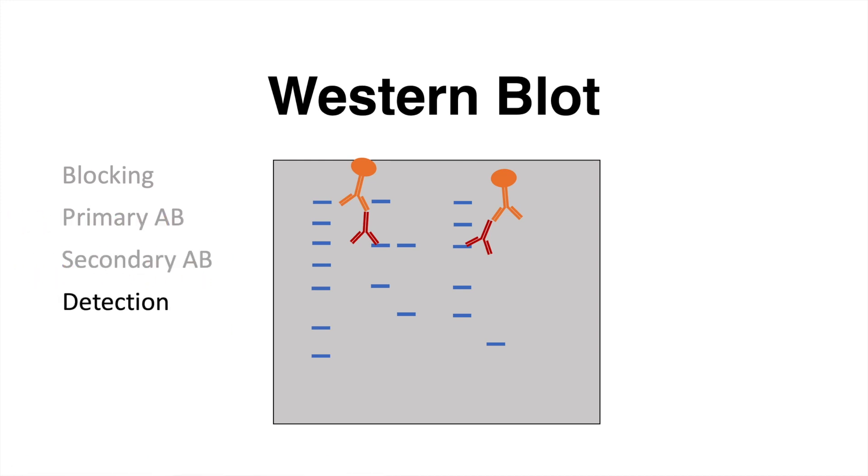The detection of the protein of interest is the last step in Western blot analysis. For that purpose, the secondary antibodies are conjugated to an enzyme. For many Western blot assays, secondary antibodies are conjugated with horse-radish peroxidase. The protein of interest is bound by a primary antibody. The secondary antibody binds to the primary antibody.